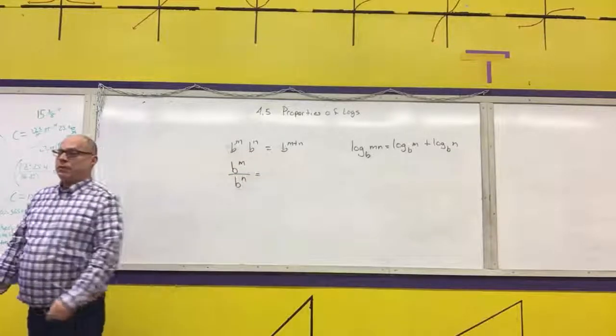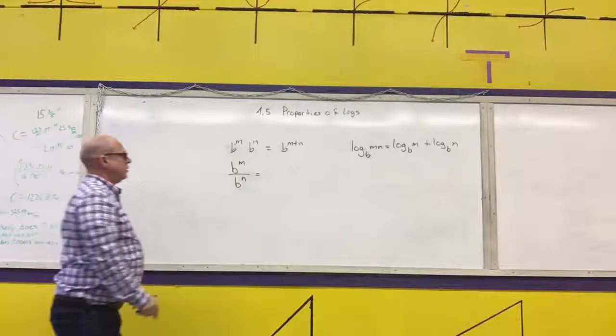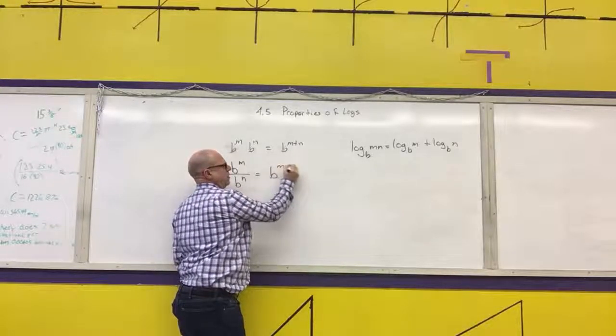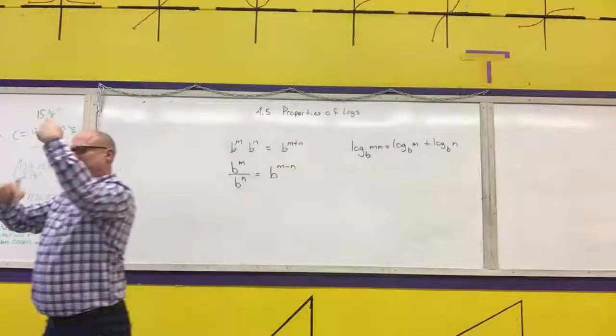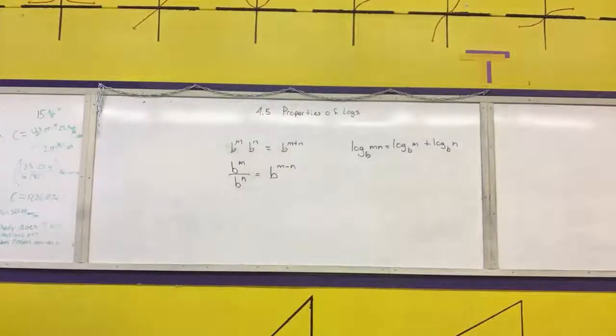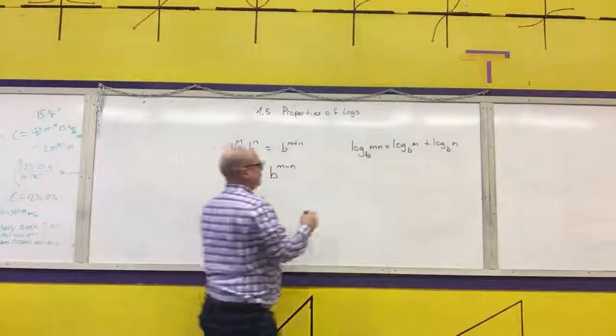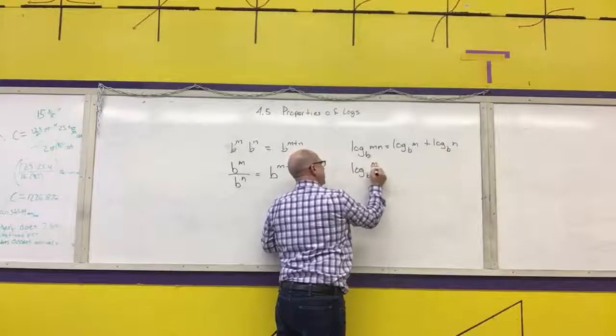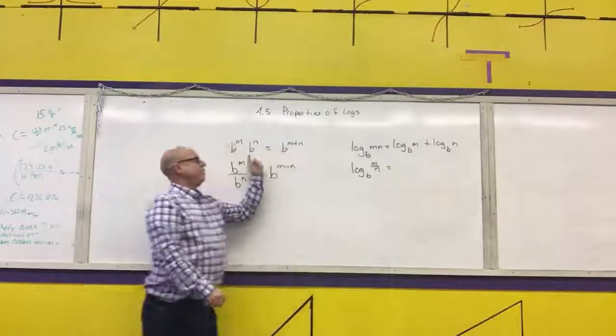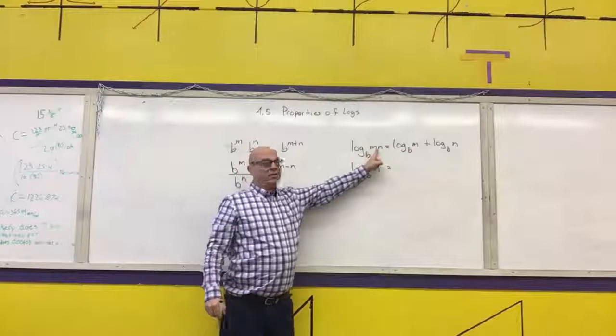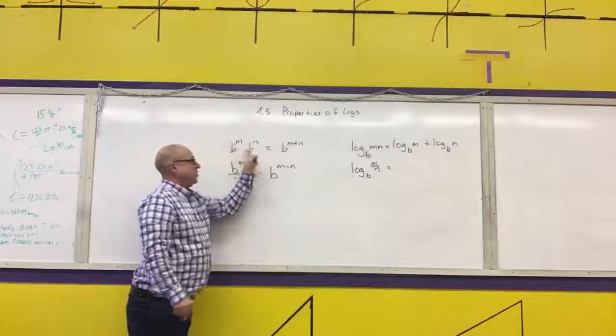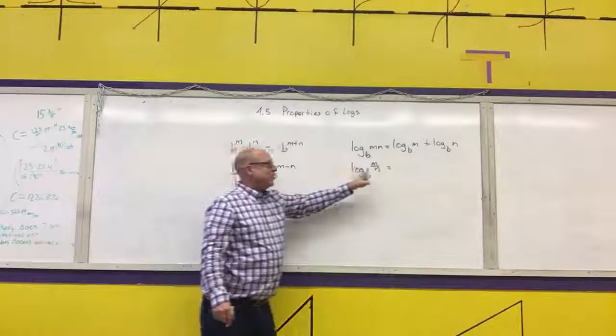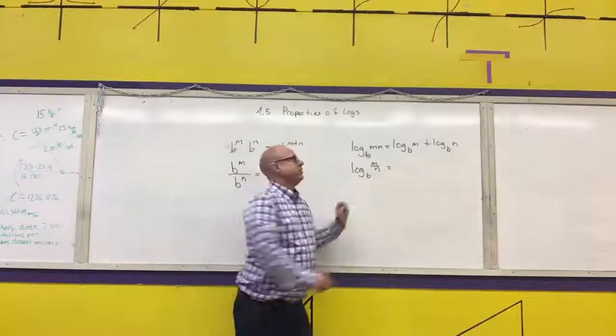What would I do here? B to the M minus N. So it would be B to the M minus N. If I have a quotient of exponents, I subtract the denominator from the numerator. So here, I had a multiplication problem, and I ended up adding. Here, I have a multiplication problem, I ended up adding. Here, I have a division problem, I ended up subtracting. Here, I have a division problem, what am I going to do? Subtract.